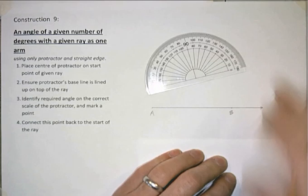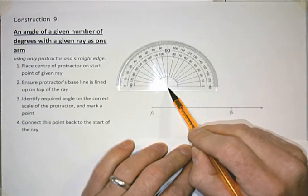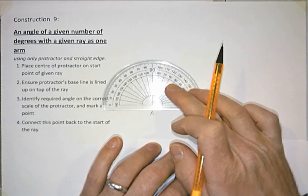So the first thing we need to do is we need to place our protractor correctly. The key point is there's a center of the protractor and that needs to go at the point where we want our angle to come out of.